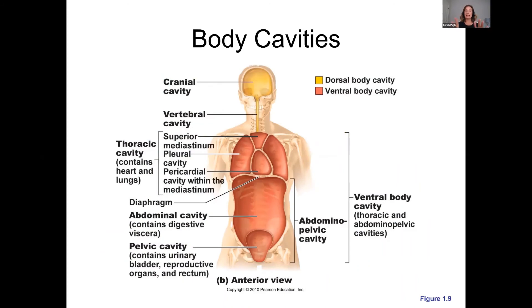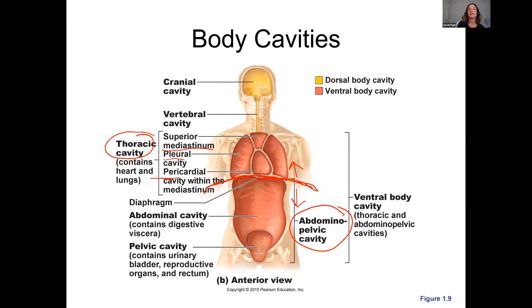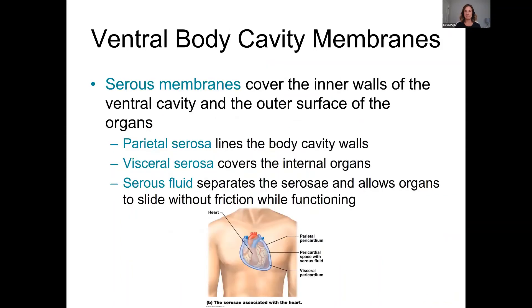Looking at this anterior view, you can see the ventral cavity in red. The diaphragm separates the thoracic cavity above from the abdominal pelvic cavity below. Within the thoracic cavity we have the mediastinum, pleural cavities, and pericardial cavity. In the abdominal pelvic cavity below, we split it into abdominal and pelvic. In the back, the dorsal cavity in yellow shows the cranial cavity housing the brain and the vertebral cavity.